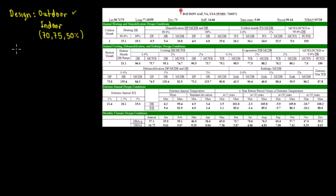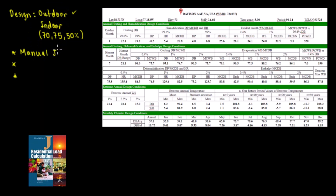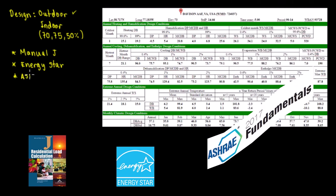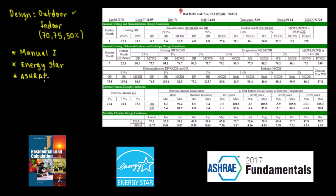On the other videos we explained that if we don't know the outdoor conditions we have three different sources. Source number one is Manual J — we'll put the link in the description below. Number two is Energy Star. And number three is ASHRAE Fundamentals — they call it ASHRAE weather data. For this video we're specifically going to be talking about the ASHRAE weather data.